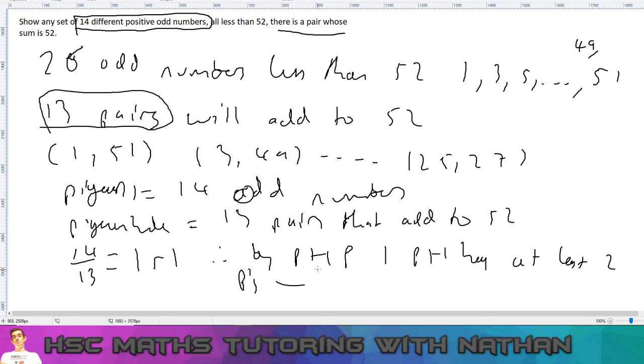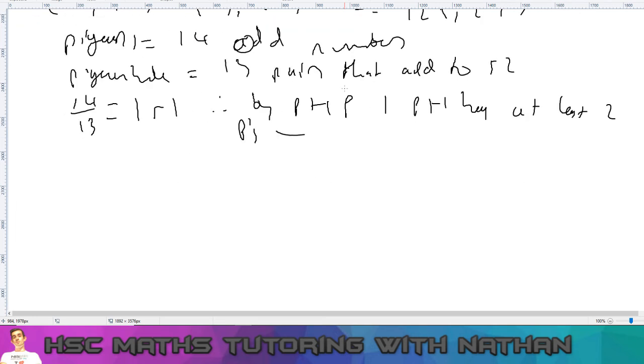Okay, so how does that mean there's a pair whose sum is 52? Well, think of it like this. Let's draw the diagram to illustrate. So these are our 13 pigeonholes, and there are 2 in this one pigeonhole. So what that means is—there is—so the pigeonholes are the pairs that add to 52, and we've just, by picking 14 numbers, we've ensured that 2 of those odd numbers will be at least in that one pigeonhole. I.e., we're going to have one of those pairs that adds to 52.